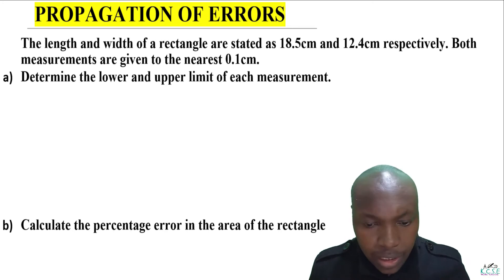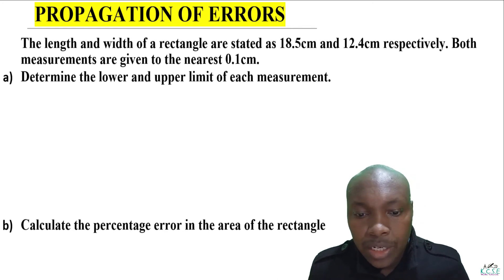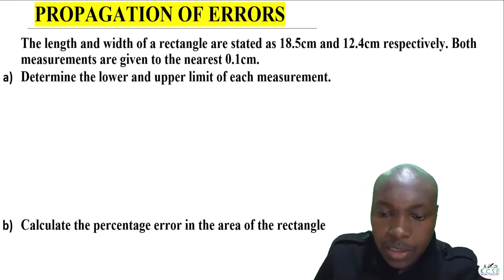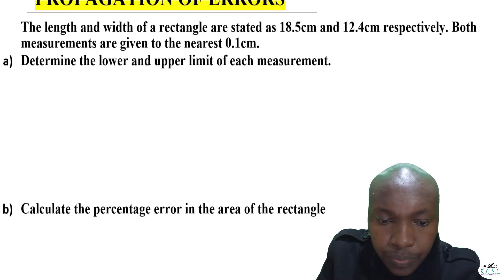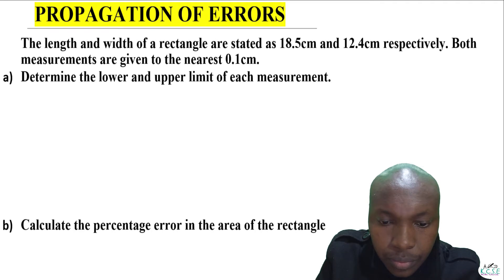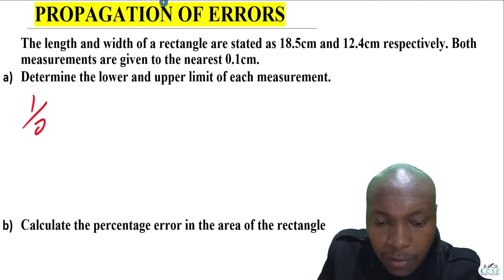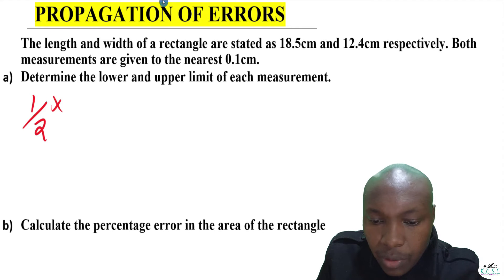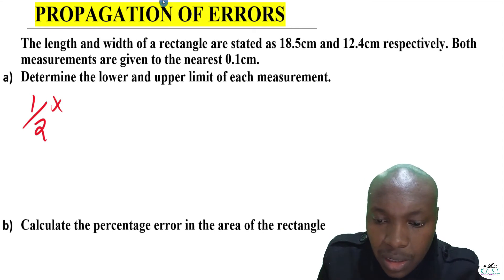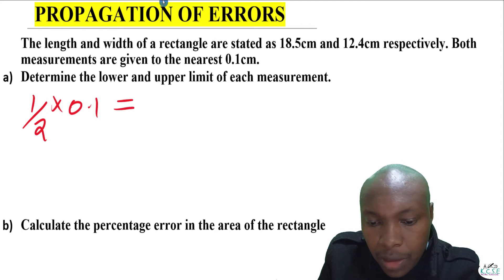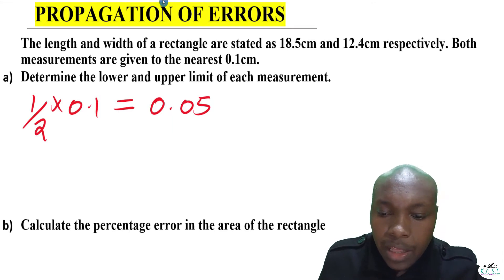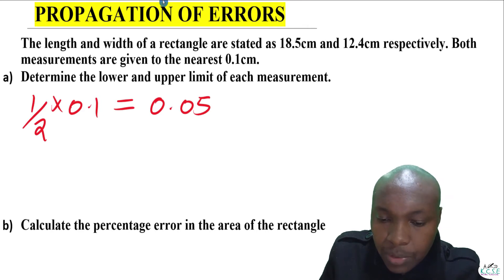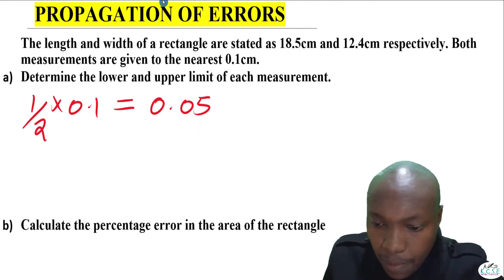To get the upper and lower limits, we need to find the error in each measurement. The error is given by one half multiplied by the smallest unit of measurement. In this question, the smallest unit is 0.1, so the error will be 0.05. This 0.05 is the absolute error in each of those measurements.